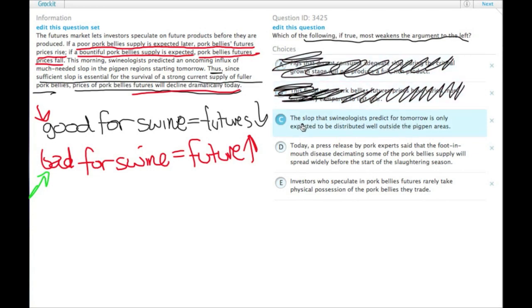C, the slop that swinologists predict for tomorrow is only expected to be distributed well outside the pig pen areas. So while this is somewhat bad, it's not the good thing that they were expecting to happen, we need something bad to happen for futures prices to actually go up.